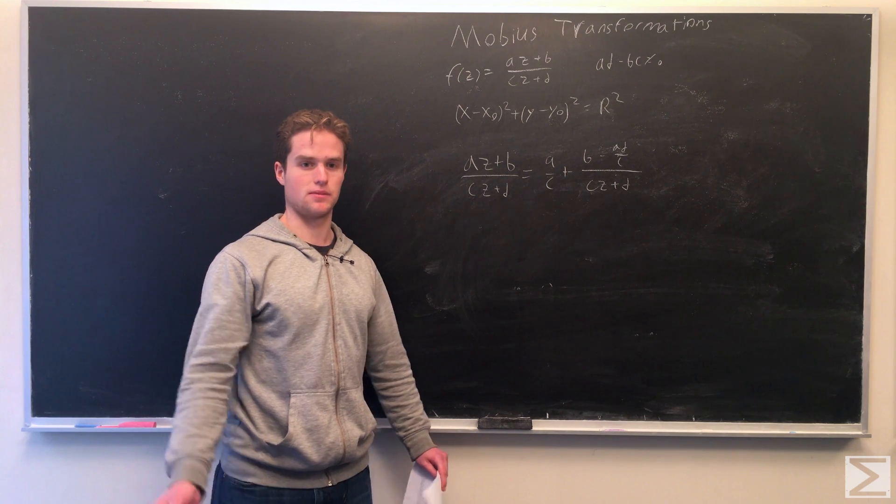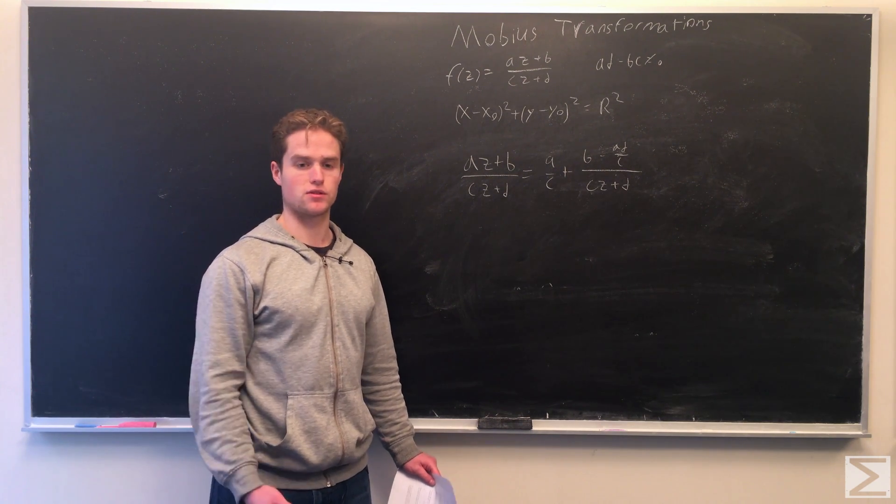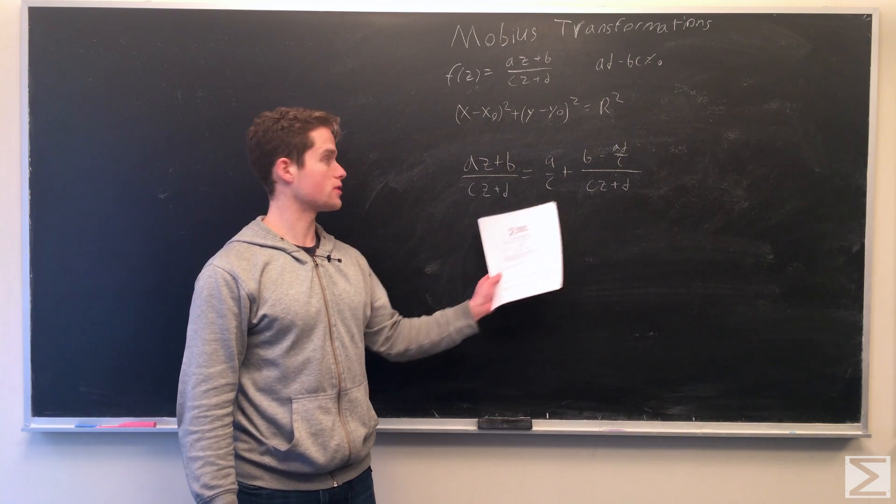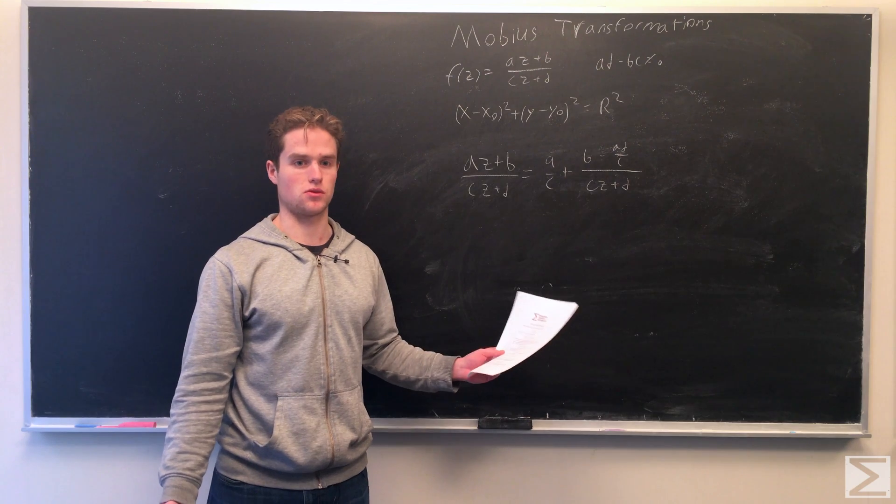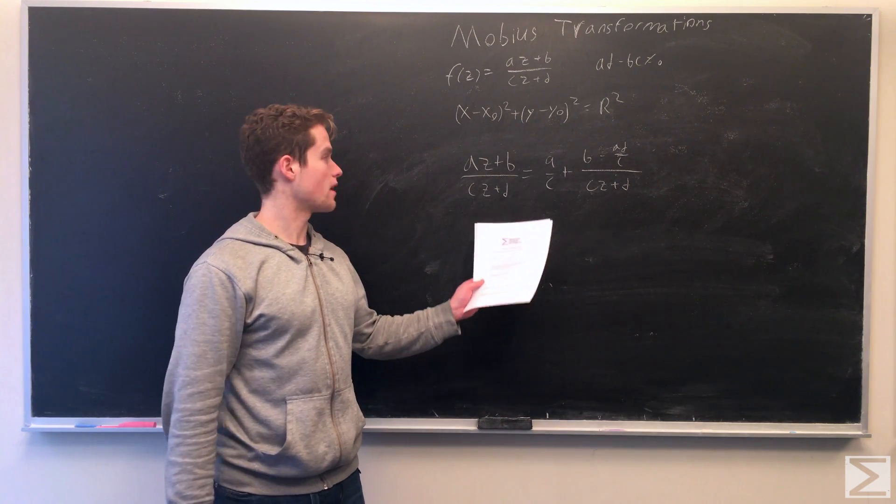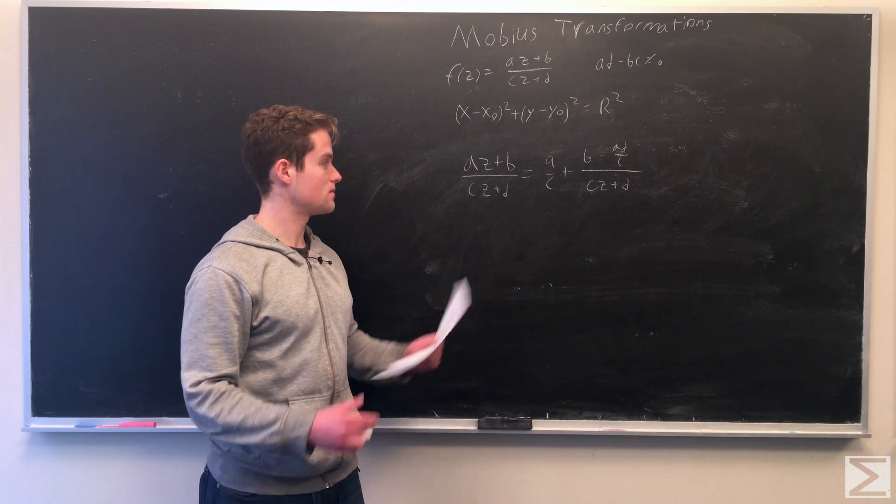All three of these transformations, note that these linear ones obviously preserve our circles and lines. And we know the inverse also preserves circles and lines. This whole Mobius transformation must also preserve circles and lines. And so from that, we conclude that lines and circles get sent to lines and circles by our Mobius transformation.